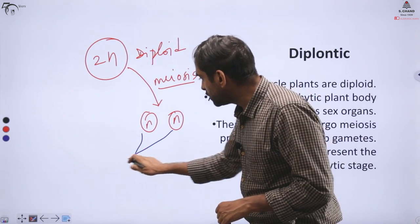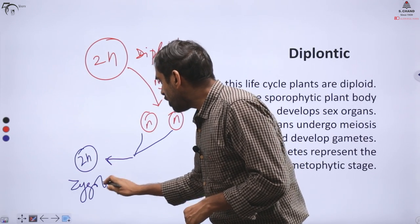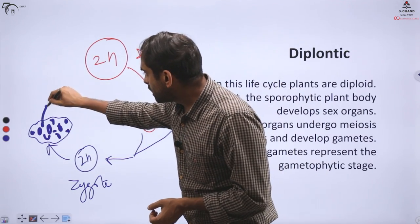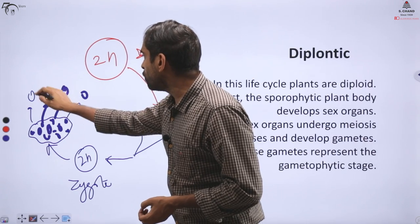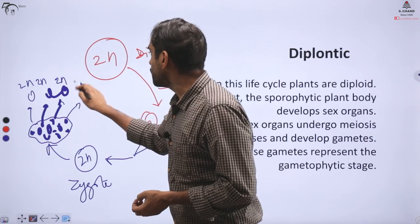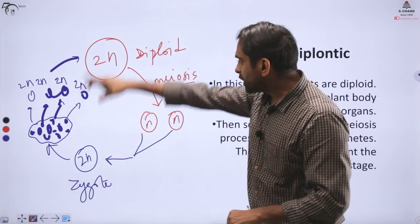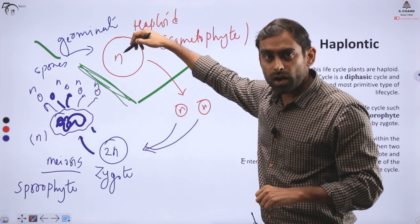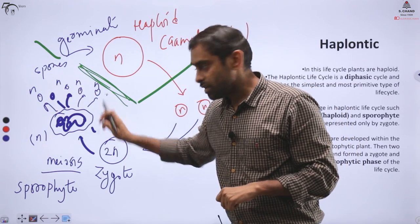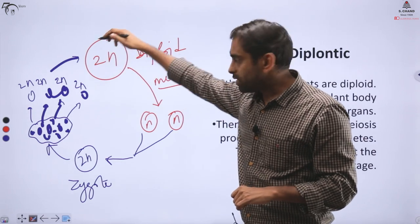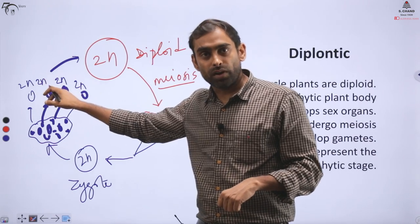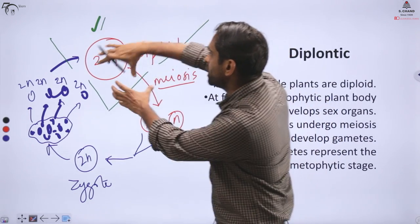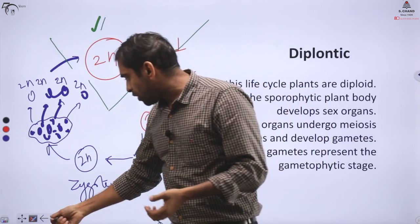Now once these gametes have been formed, this will again give rise to zygote. After zygote forms, that will again lead to the formation of spore-releasing bodies, and they will eventually generate spores which will be diploid, unlike the previous chart. So it looks exactly the same as haplontic, but see the difference. Go back - there the life forms were haploid, zygote was diploid, and spores were again haploid. But if you look here, organism is diploid, gametes are haploid, zygote is again diploid, and spores are again diploid.